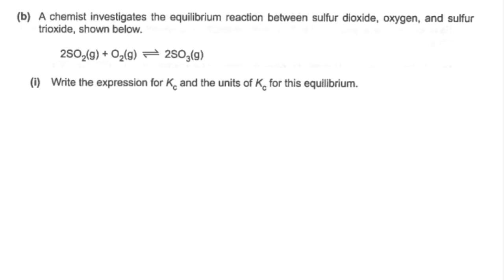So the first part of the question, we've got to write the expression for Kc and state its units. So products over reactant concentration. So remember, we use the numbers balancing the equation as powers. So it would be the concentration of SO3 squared all over the concentration of SO2 multiplied by the concentration of O2.